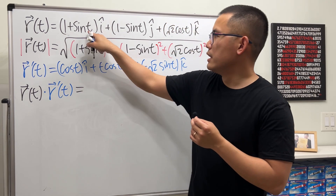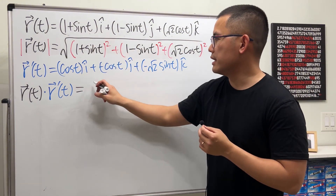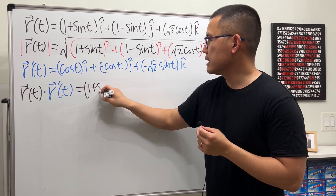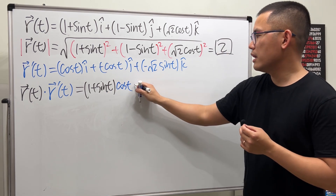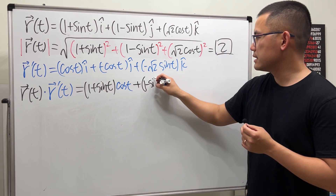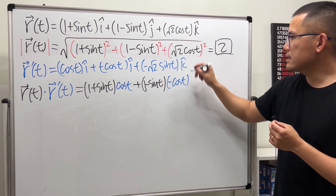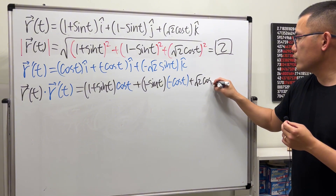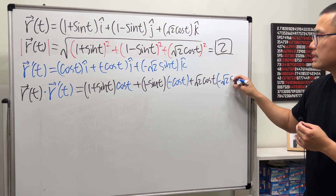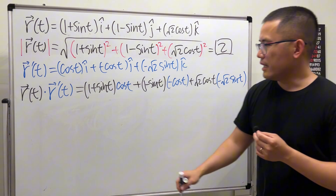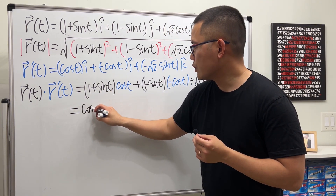Now let's compute r(t)·r'(t). We take each component of r(t) times the corresponding component of r'(t) and add them up: (1 + sin t)(cos t) + (1 - sin t)(-cos t) + (√2·cos t)(-√2·sin t).